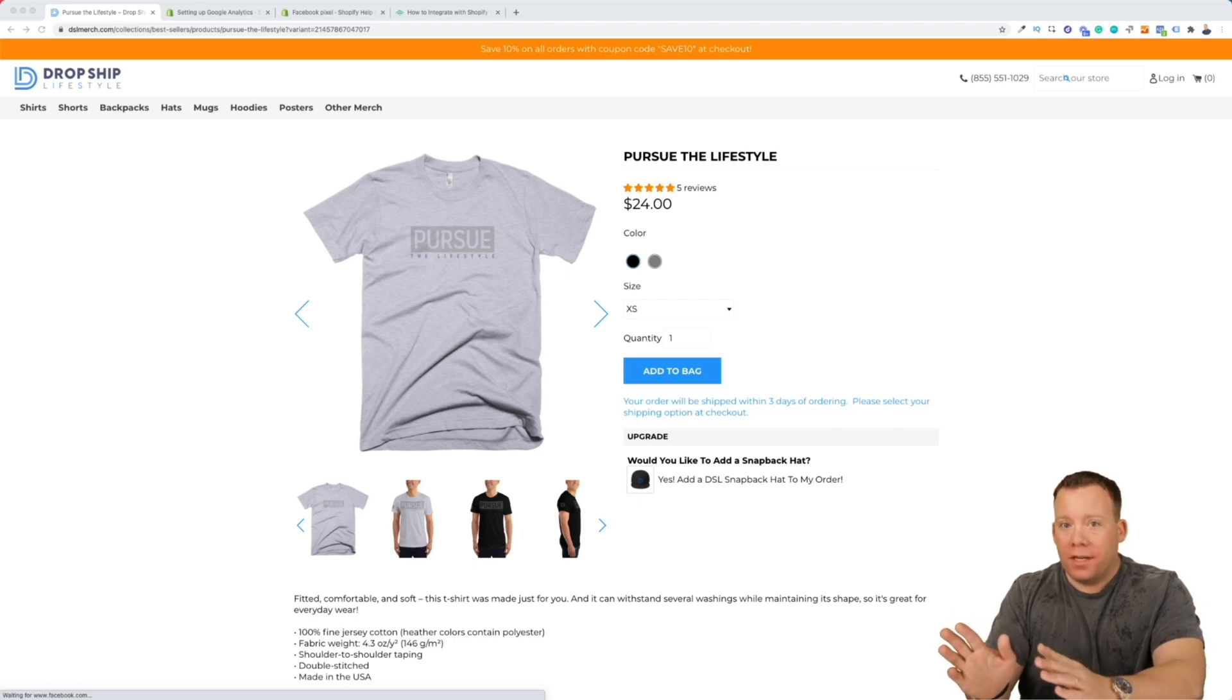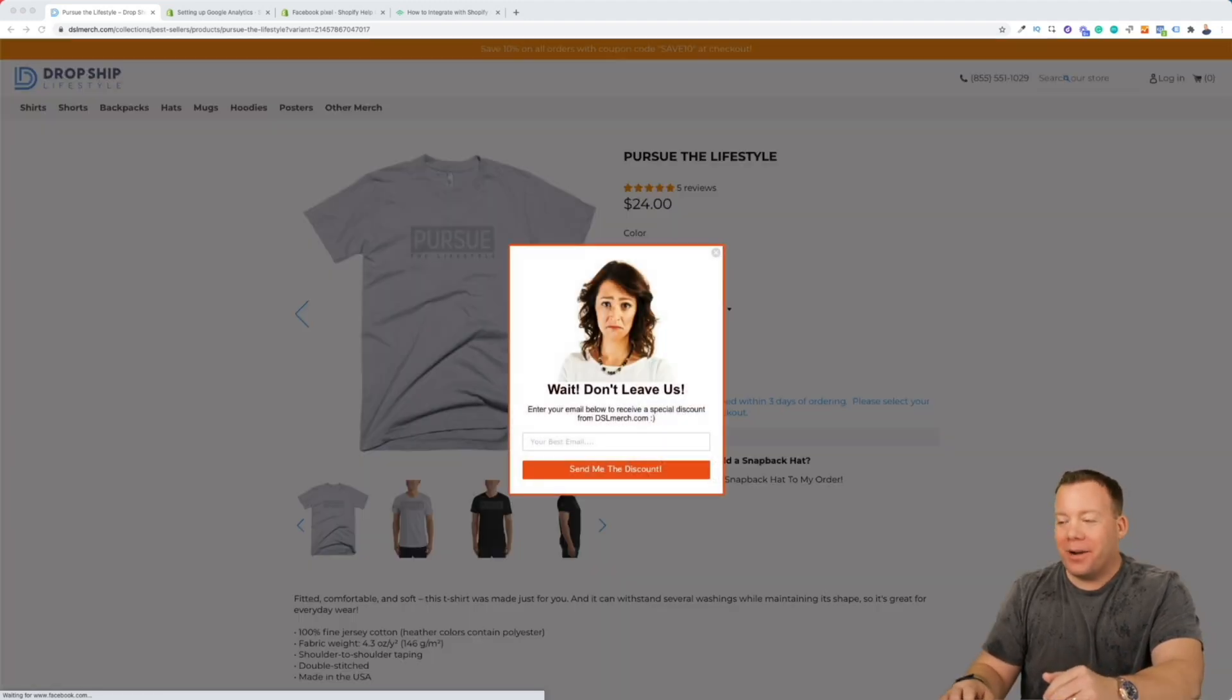So what I have on the screen here is just the Drop Ship Lifestyle merch store. It's where we sell merchandise from Drop Ship Lifestyle. Sounds pretty self-explanatory, right? And the first thing I wanna talk about is what to do to set up the frameworks so that you actually can be remembered. And by that, I mean the backend of what's gonna power all this. Now, you just saw the first piece of it when I moved my mouse and went to exit out of the screen. And what you see here is an exit intent overlay.